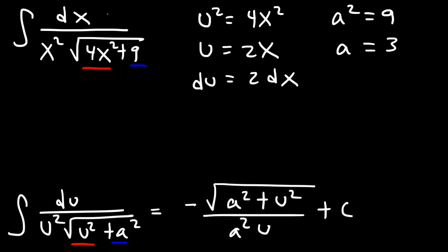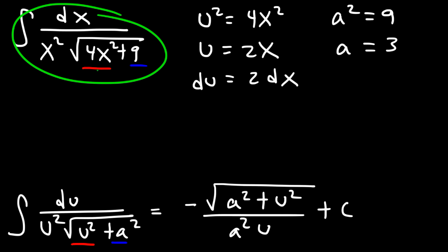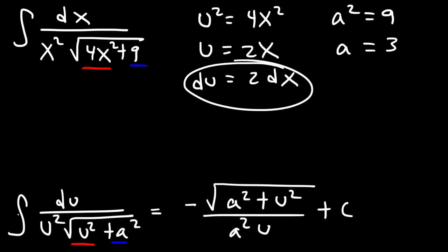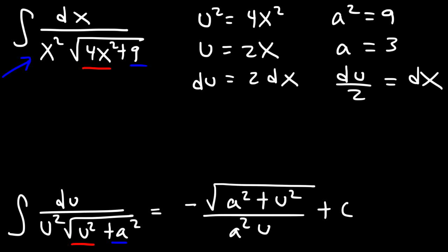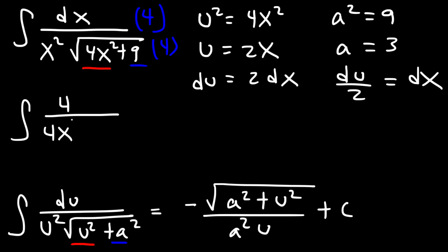When du doesn't equal dx, you need to convert this expression by changing all x variables into u variables before applying the formula, because you need to incorporate the 2 in your final answer. Solve for dx by dividing both sides by 2, so dx is du over 2. We need a u squared in front of the radical, so we'll multiply the top and the bottom by 4. Now we have 4 over 4x squared times the square root of 4x squared plus 9, times dx.